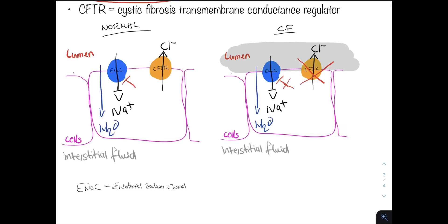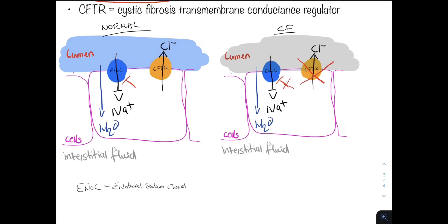So here in grey, this is dehydrated, whereas here in blue the lumen is maintaining its lubrication and hydration. This results in a thickened dehydrated mucus that builds up in the lumen, for example of the lungs or the pancreas. The same concept applies to the bowel — fecal matter inside the bowel can dehydrate and cause obstruction.